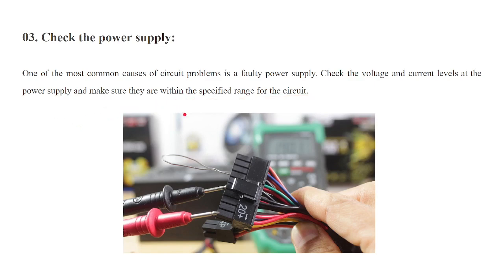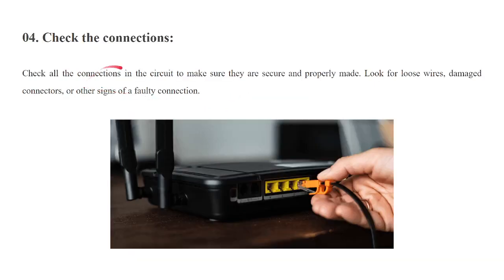The fourth step is to check the connections. If there are any loose connections, you can check with a multimeter. A loose connection will create many problems like sparking and other issues. Check the connections in the circuit to make sure they are secured and properly made. Look for loose wires, damaged connectors, or other signs of faulty connections.